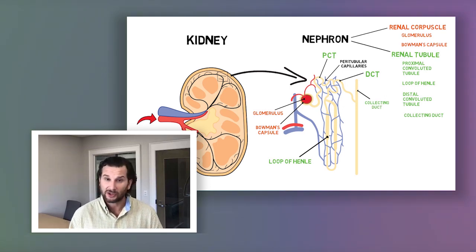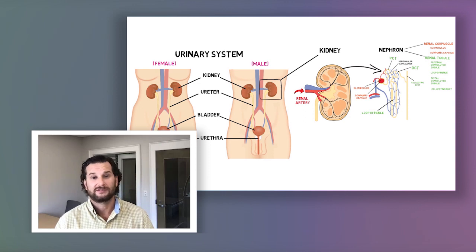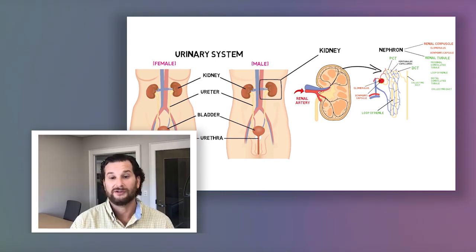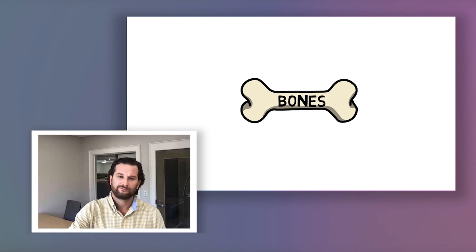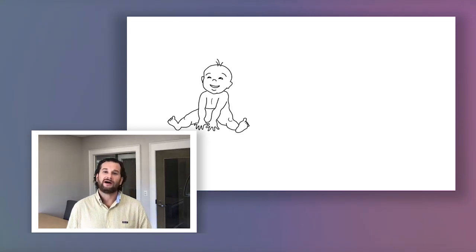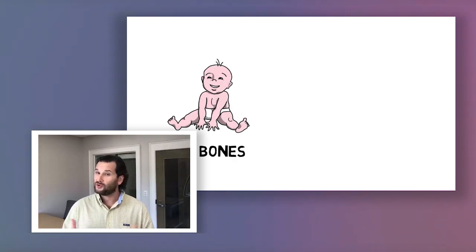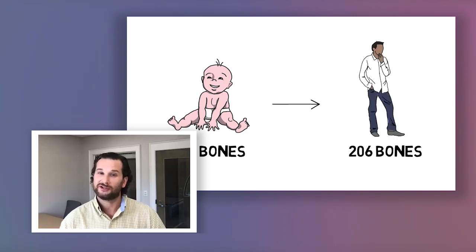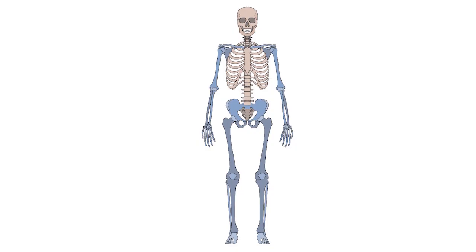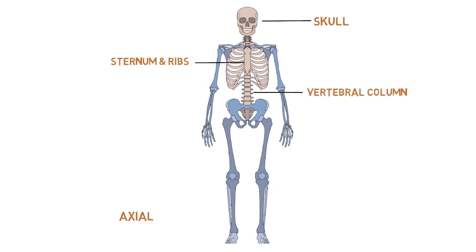Know urine excretion and ADH — the anti-diuretic hormone — and urinalysis, both macroscopic and microscopic. For the skeletal system, know how many bones are in the body: we are born with 270 bones, and as an adult we have 206 — many of those bones fuse together. There are two parts of the skeletal system: the axial skeleton and the appendicular.